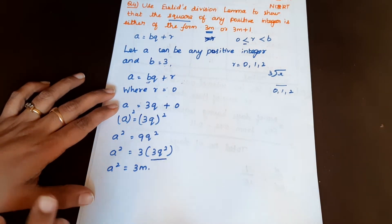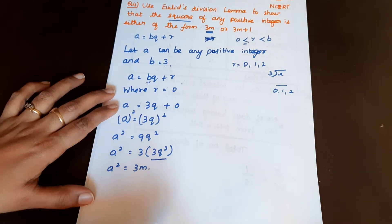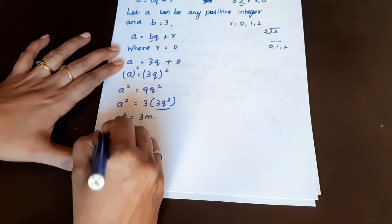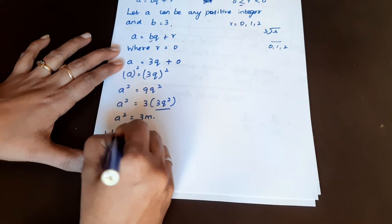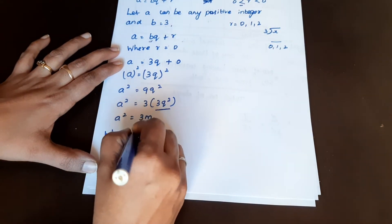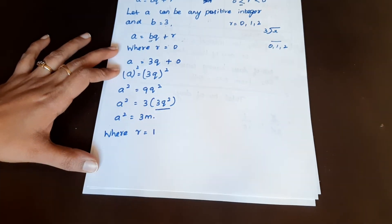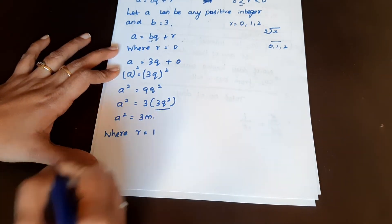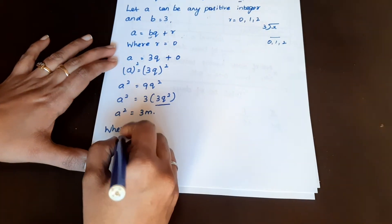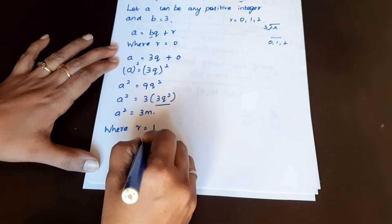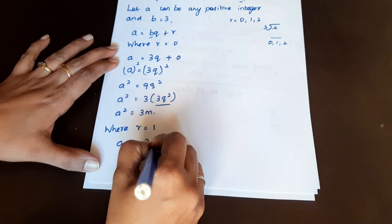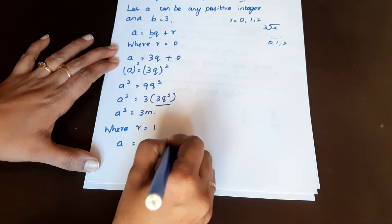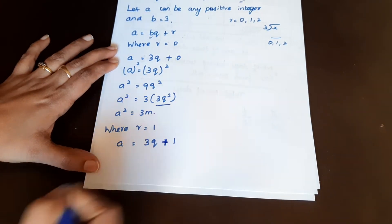Next, where r is equal to 1: we look at what form it gives us. Where remainder is equal to 1, let us see what form it takes. So if a equals 3q plus 1.